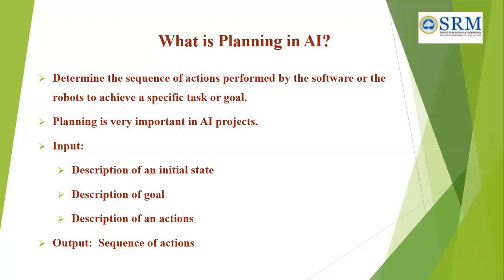For any planning system, we need the domain description, action description, and goal description. Determining the sequence of actions performed by the software or the robot to achieve a specific goal is called planning. The input of the planning process includes: first, we must describe the initial state of the problem solution space; second, we describe the goal state — what we have to achieve; and third, a description of actions — the set of actions to be performed to achieve the goal from an initial state.